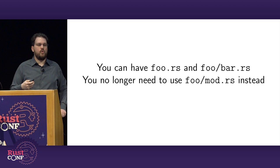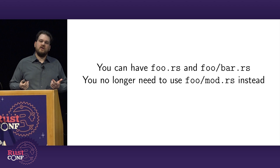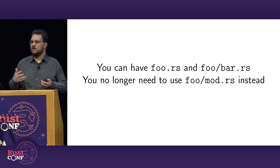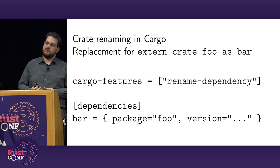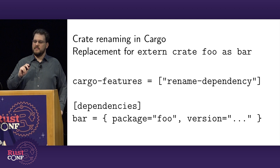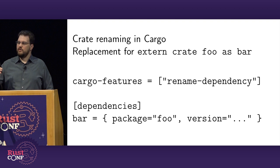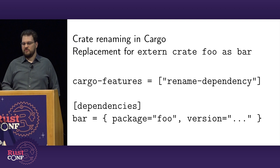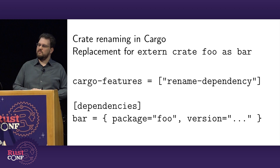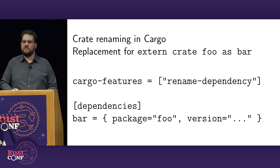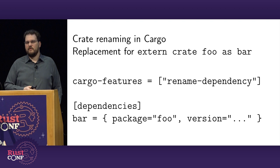We also looked at why else people use 'extern crate'. We needed to deal with crate renaming — people could write 'extern crate foo as bar;' and reference the crate as 'bar' everywhere else. We ended up with a new feature in cargo that lets you say I'm using the name 'bar' but it's really the package named 'foo' — go get that package and name it 'bar' in my program throughout. This was the replacement for 'extern crate foo as bar;', and that was kind of the last use case for extern crate, other than 'no_std' or 'no_core' scenarios where you still need to reference std or core explicitly.